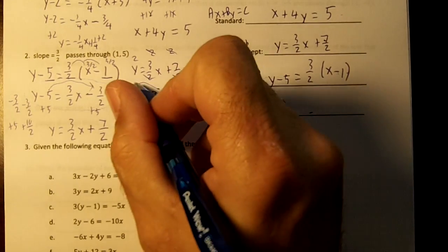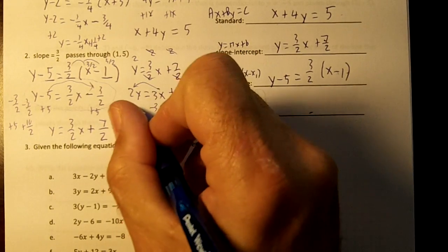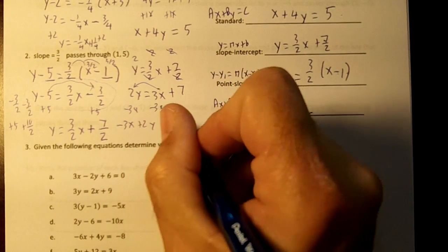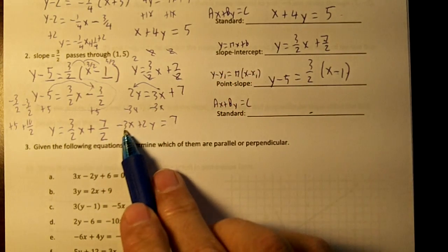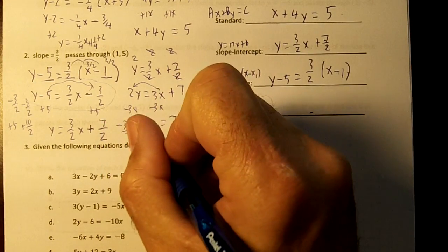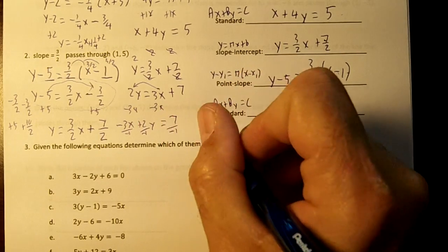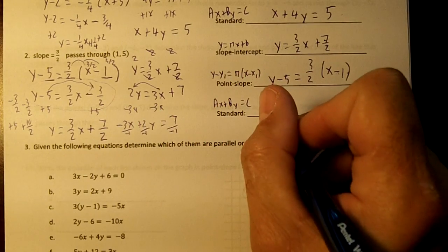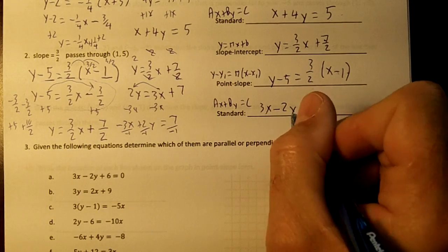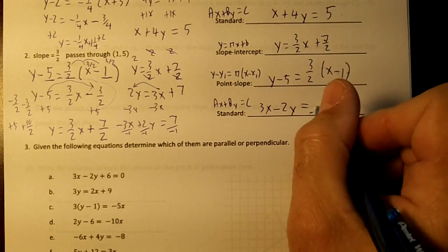Now then we need to move the x over. We'll subtract the 3x across. You'll get negative 3x plus 2y equals 7. The x can't be negative, so we're going to switch the signs of everything. Basically, you're dividing by negative 1. You'll get 3x, the opposite of a plus 2y is a minus 2y, equals the opposite of 7 is a negative 7.